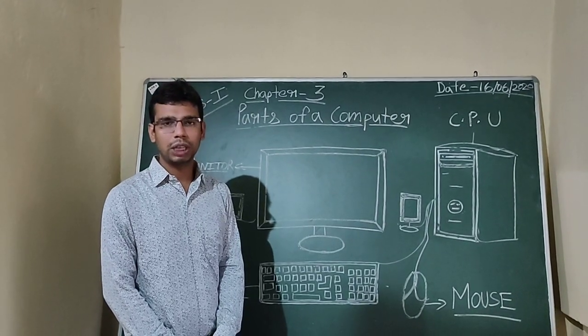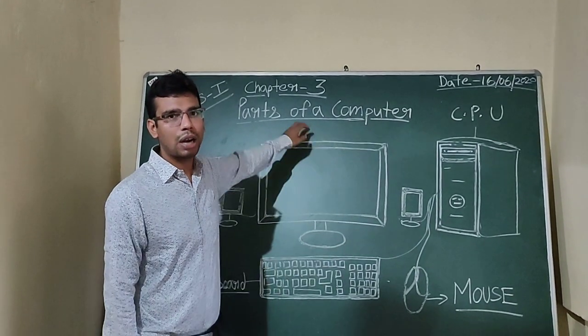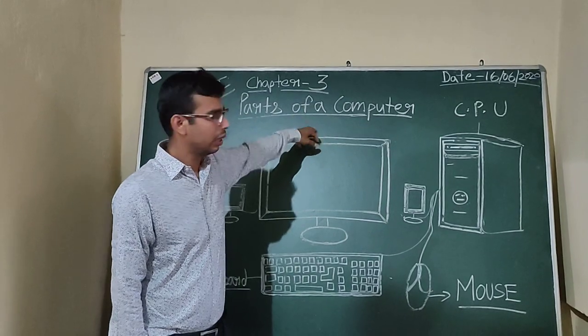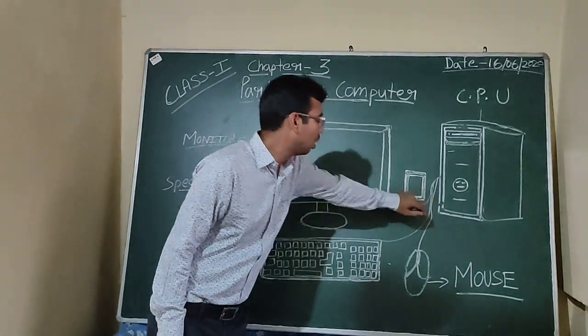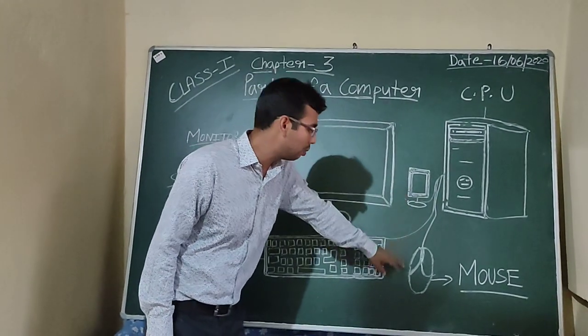Good morning children, today I am going to explain chapter 3, parts of a computer. This is a monitor, a keyboard, a CPU, a speaker and a mouse.